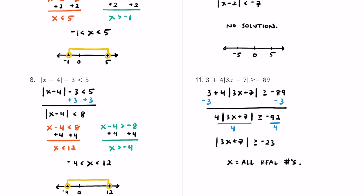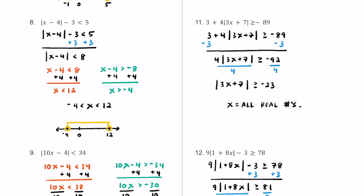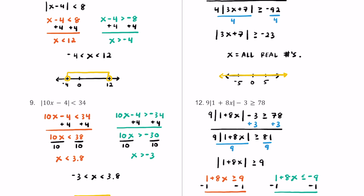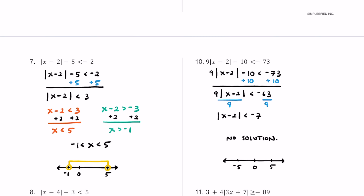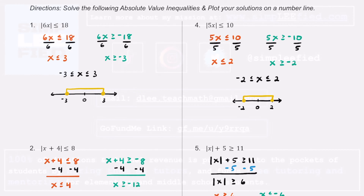When you have all real numbers as in number 11, you draw your number line and since any number works, you can color in the whole line and draw an arrow through it showing everything is fair game. So there you have 12 different practice problems on solving absolute value inequalities. I hope you found the video helpful, and as always, keep up the great work and I'll see you in the next one.